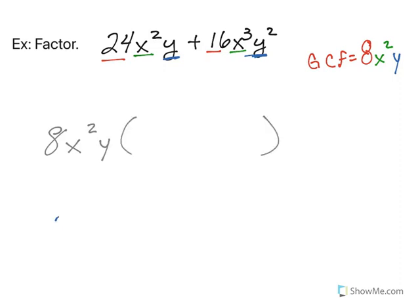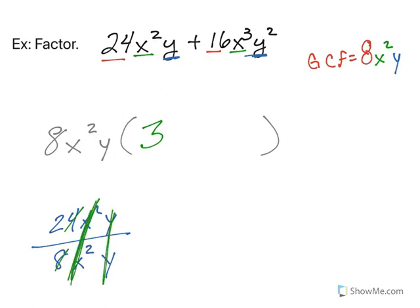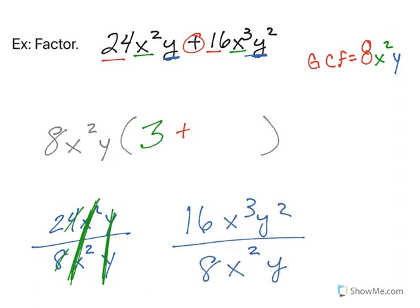And we do the same thing. So I take 24x squared y divided by 8x squared y. 24 divided by 8 is 3. The x squareds are going to just cancel out. The y's are going to cancel out. And I'm just left with 3. I bring down my plus sign.